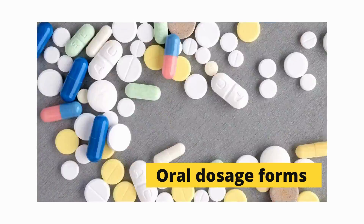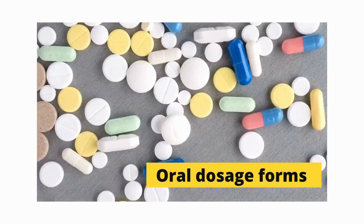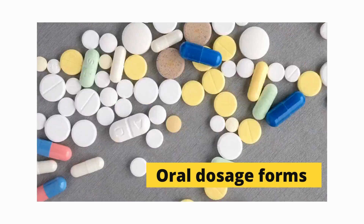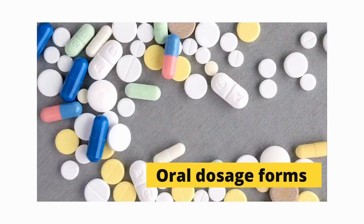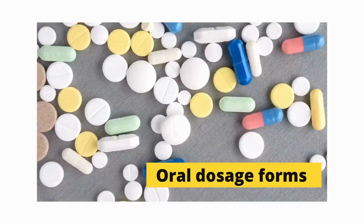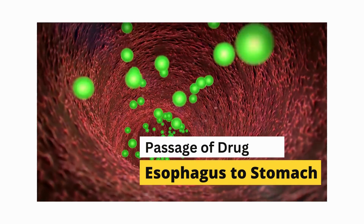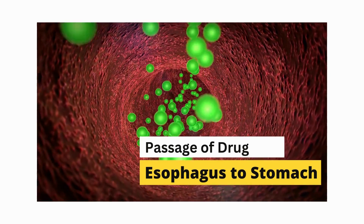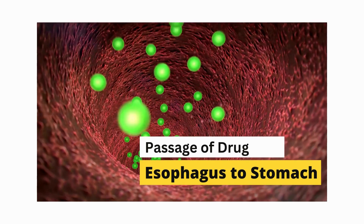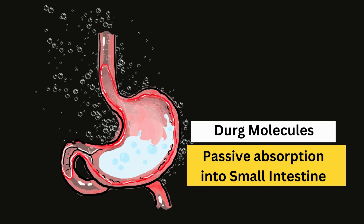Oral drugs undergo a complex journey in the body. Oral drugs can be tablets, capsules, liquids, and suspensions. Once ingested, a drug goes into the esophagus and then passes into the stomach. The stomach secretes acid and enzymes, which enable the drug to disintegrate and dissolve.